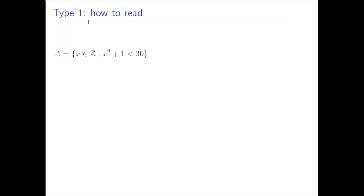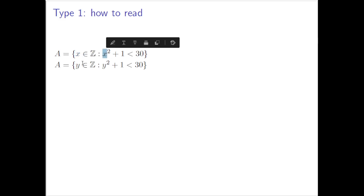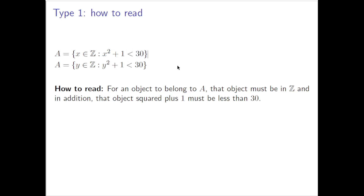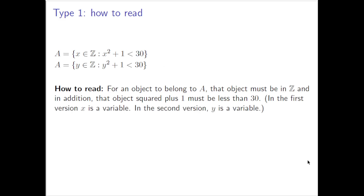Let's focus on Type 1 and talk about how to read it. Here's that Type 1 set from the previous slide. Before digging further, this same set could be written with Y replacing X everywhere — that's no different. X here is really a variable, a placeholder. So these two different-looking descriptions describe exactly the same set. How do we read this? It's saying: for an object to belong to A, that object must be in ℤ, and in addition, that object squared plus 1 must be less than 30. That's why the letter doesn't matter — in the first version X is the variable, in the second version Y is the variable.